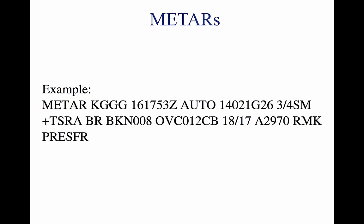A typical METAR report contains the following information in sequential order. 1. Type of report (METAR): the first is the routine METAR report transmitted every hour; the second is the aviation-selected SPECI, a special report that can be given at any time to update the METAR for rapidly changing weather conditions, aircraft mishaps, or other critical information. 2. Station identifier — KGGG, a four-letter ICAO code. For example, KGGG is the identifier for Gregg County Airport in Longview, Texas; K is the country designation and GGG is the airport identifier. Alaska identifiers always begin with PA and Hawaii identifiers always begin with PH.